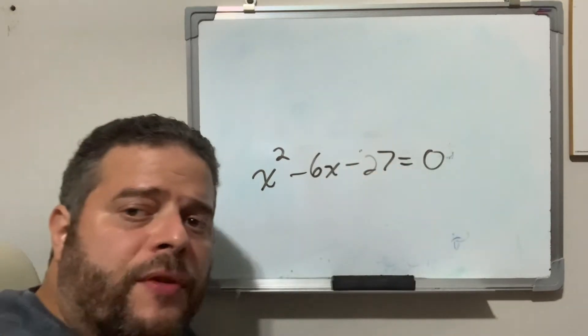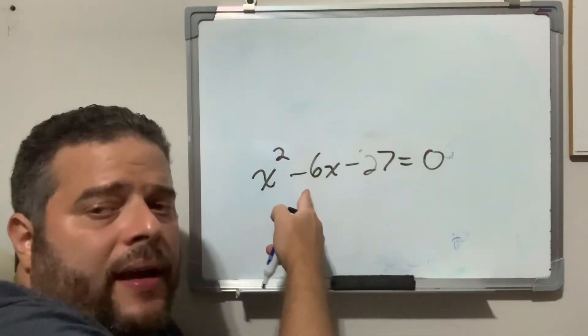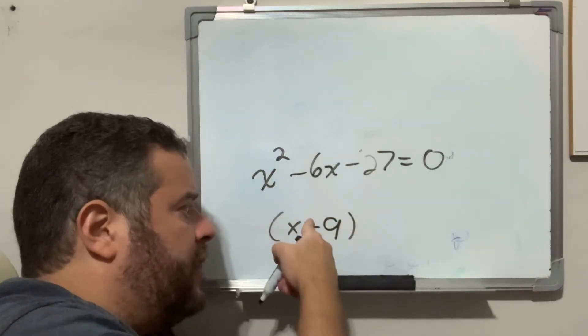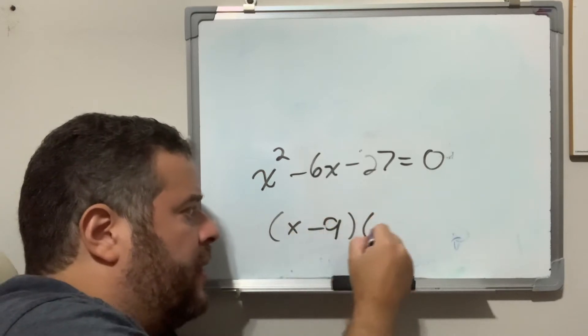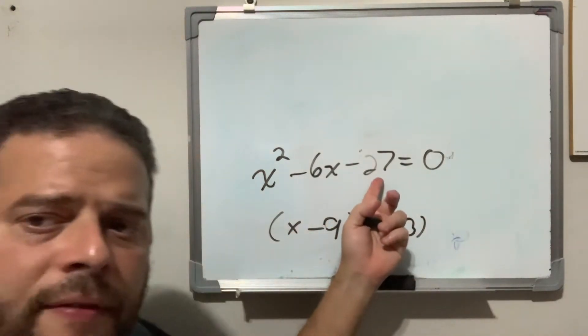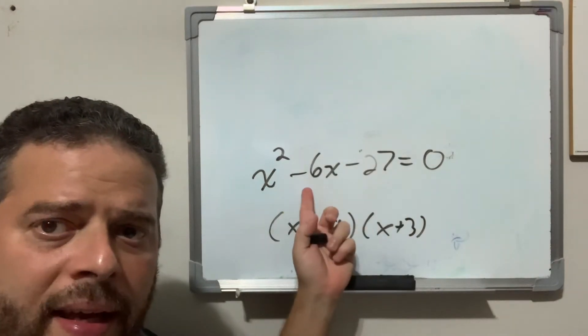We factored this. Two numbers that multiplied give you this and added give you this. It would be x plus 9, well x minus 9, times x plus 3. Multiply these two, I get negative 27. I add those two, I get negative 6.